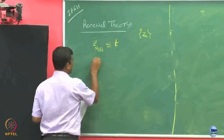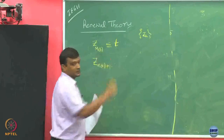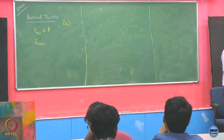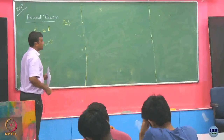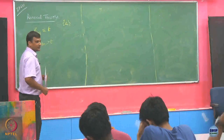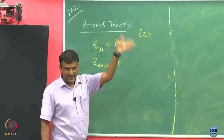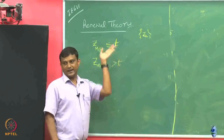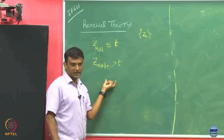Similarly, what about Z_{m(t)+1}? It has to be strictly greater than t. Why? Because by definition m(t) has included all the renewals that happened till time t. If you are looking at one more renewal beyond that, it better have happened after time t. That is why this property holds.